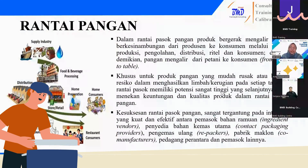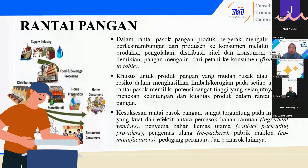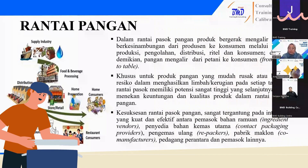Dalam rantai pasok pangan, produk bergerak mengalir secara berkesinambungan, mulai dari produsen ke konsumen, kemudian mulai proses produksi, pengolahan, distribusi, retail, dan konsumen. Dengan demikian pangan mengalir dari petani ke konsumen. Khusus untuk produk pangan yang sudah rusak atau busuk, risiko dalam penghasilan limbah atau kerugian pada setiap tahap rantai pasok memiliki potensi sangat tinggi, yang selanjutnya akan menekan keuntungan dan kualitas produk dalam rantai pasok pangan.